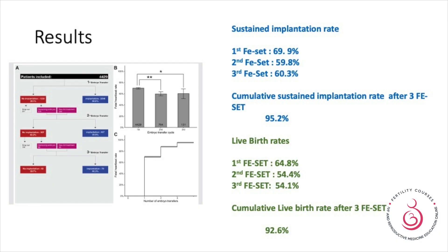Looking at the results: the sustained implantation rate for the first cycle was 69.9%, the second cycle gave 59.8%, and the third gave 60.3%.